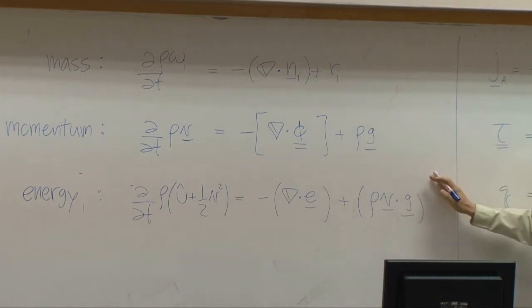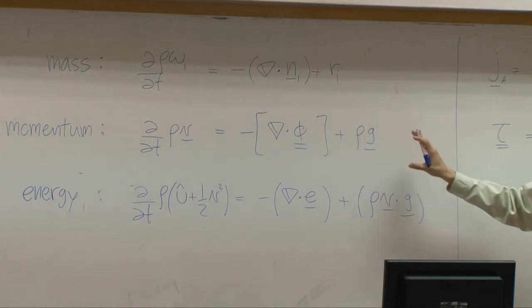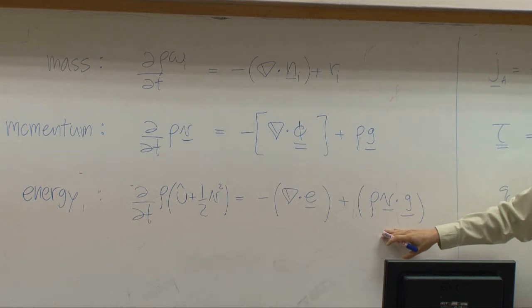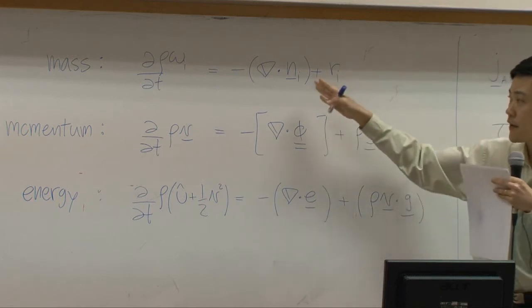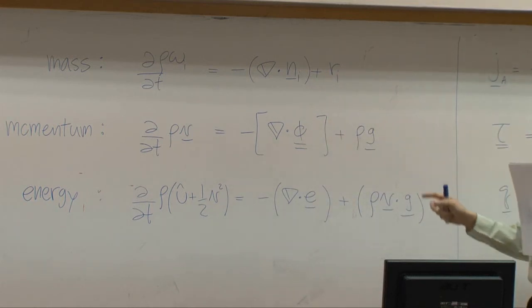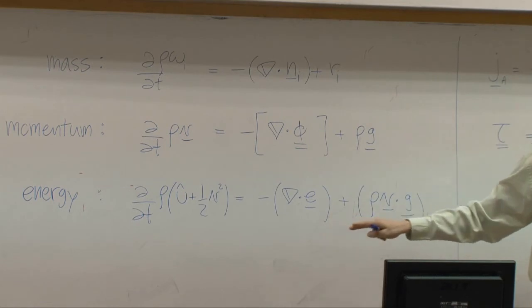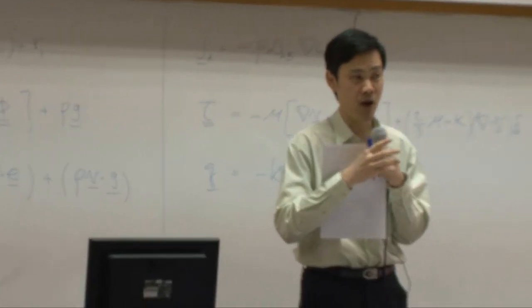The last term on the right is generation rate. Rate of generation of species that comes from reaction, generation of momentum comes from external force, and then generation of energy. This comes from work. So we have three terms. Normally, these three terms are in similar form. If you're concerned about flux, this is flux in minus out. And the combined flux that we use, the combined mass flux, combined momentum flux, and combined energy flux are consisting of two kinds, molecular flux and convective flux. And I'm sure that you are all aware about that.